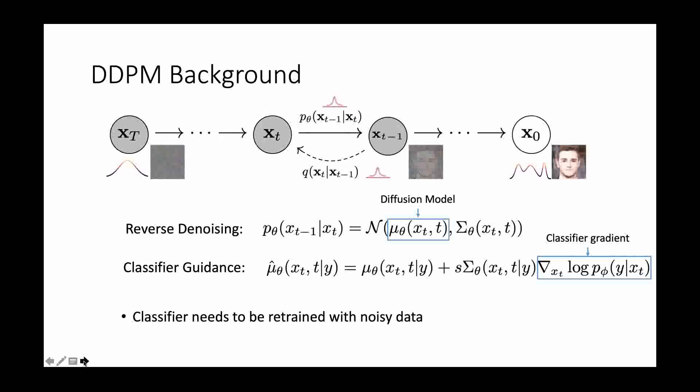Some background on classifier guidance. The main idea is to modify the diffusion function based on a retrained classifier by calculating the classifier gradient according to noise input.